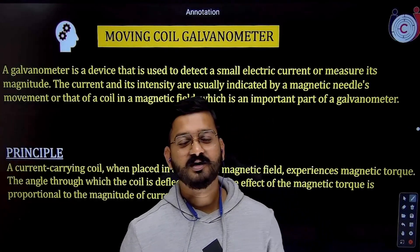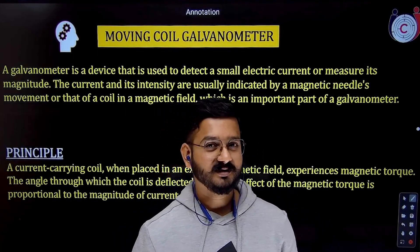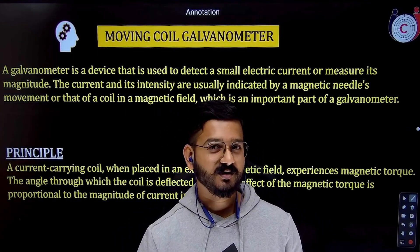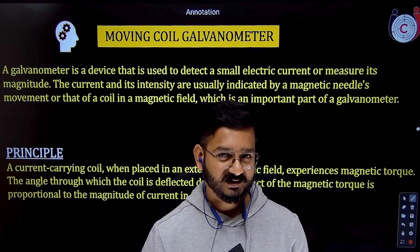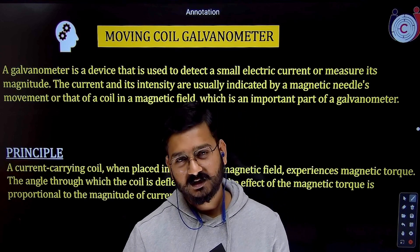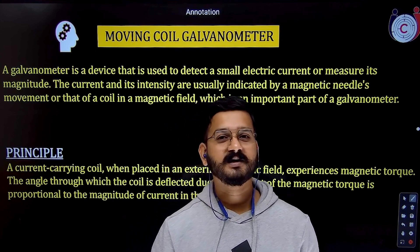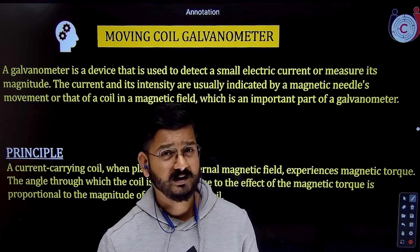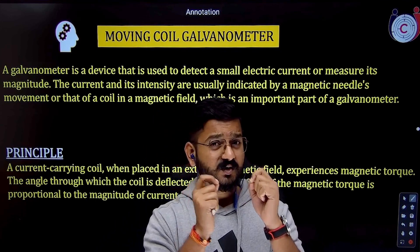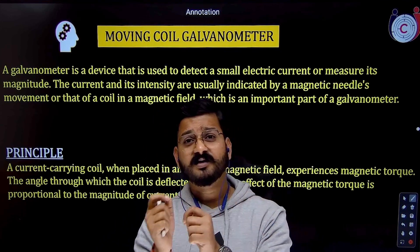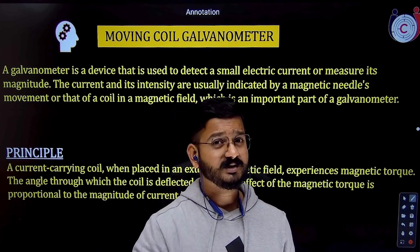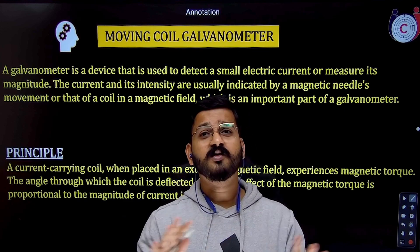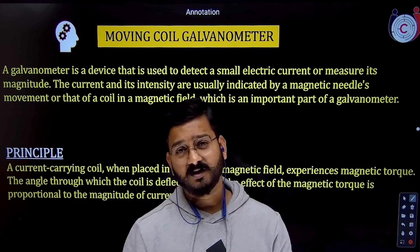Hello, dear students. Welcome to Chakru Academy's Just a Minute series, where every minute will help you enhance your conceptual knowledge and your board exam score. Today's topic is the moving coil galvanometer — a very important topic for board exams. They ask both conceptual and numerical questions from this topic. Once you go through this lecture, you will have no doubts left.